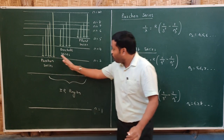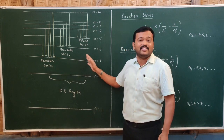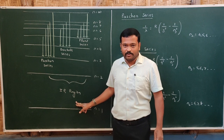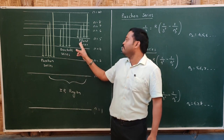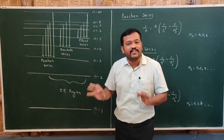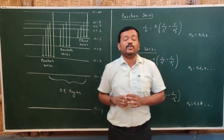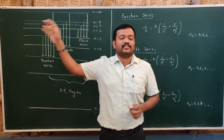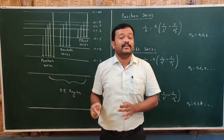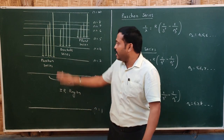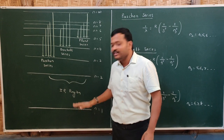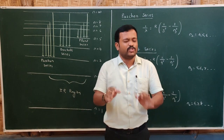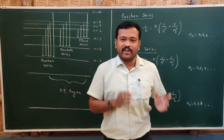The wavelengths of the Paschen, Brackett, and Pfund series all lie in the infrared region of the electromagnetic spectrum. To summarize: the Lyman series lies in the UV region, the Balmer series lies in the visible region, and the Paschen, Brackett, and Pfund series all lie in the infrared region. This covers all the spectral series of the hydrogen atom.